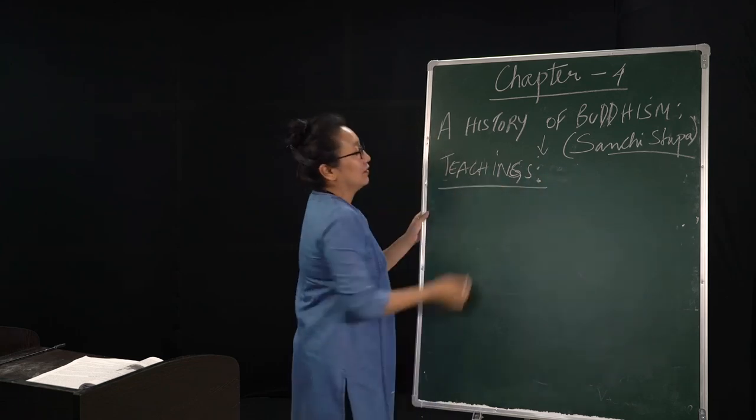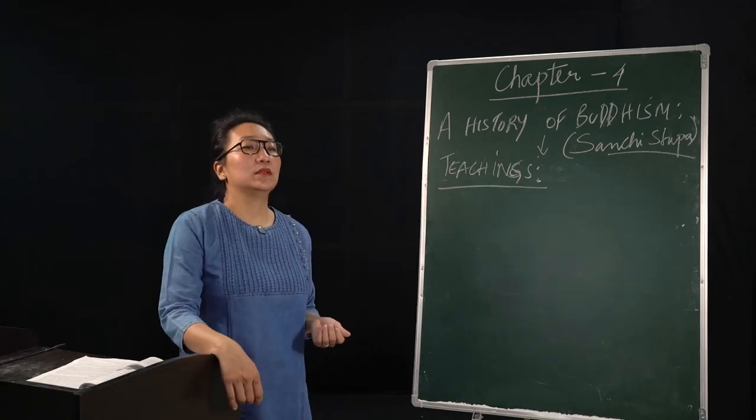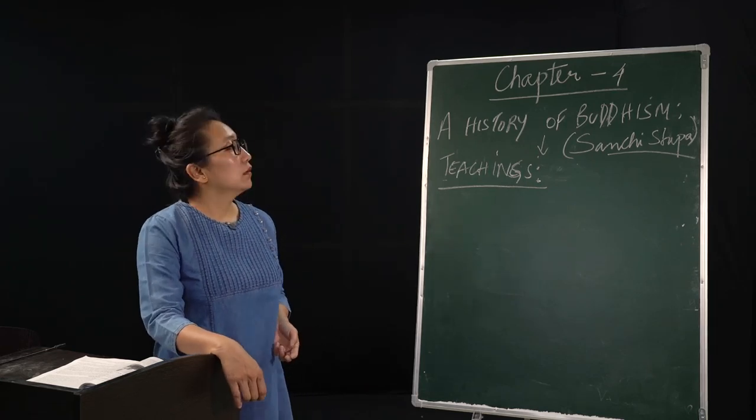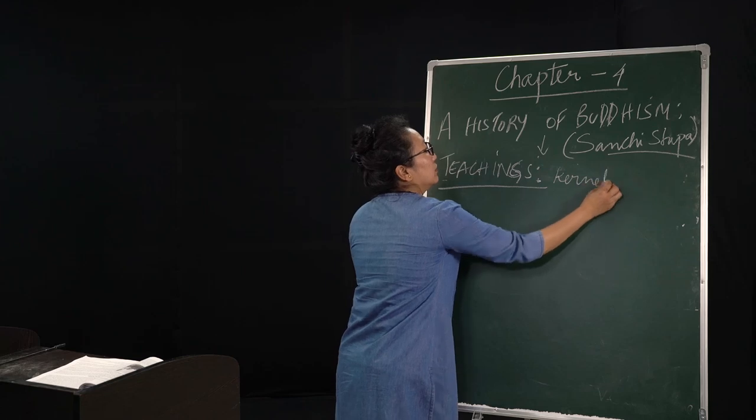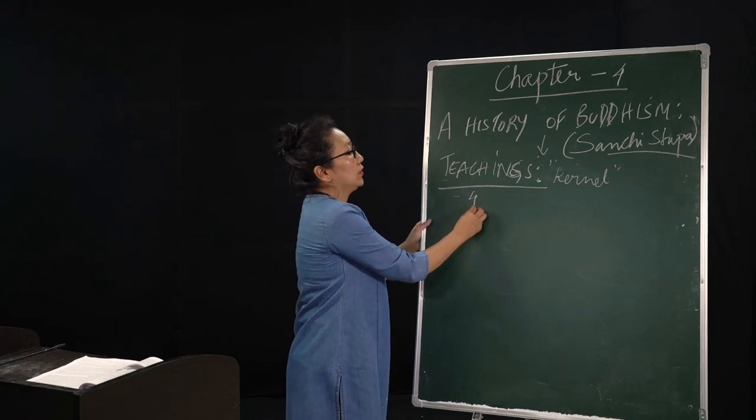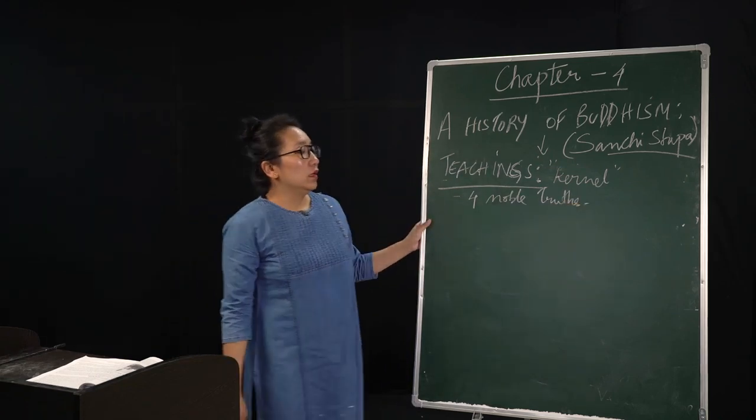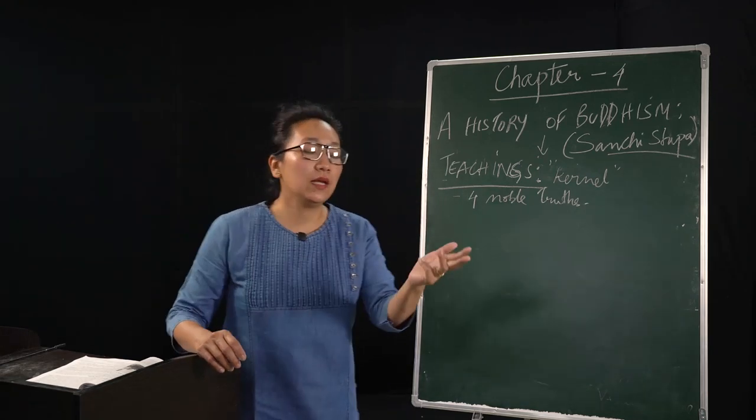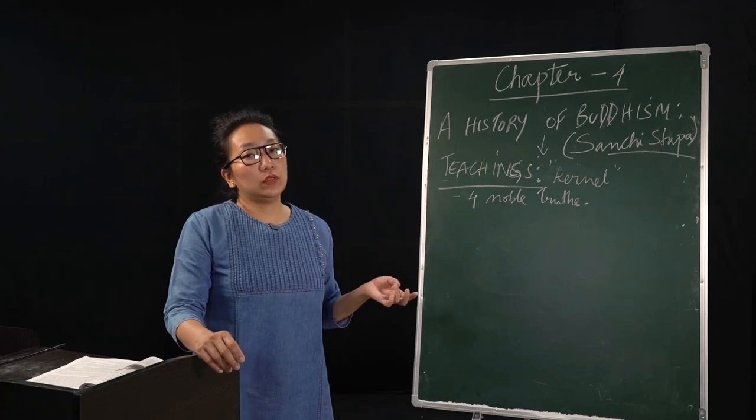He followed a number of principles that he had developed on his own by realizing the truth. The first sermon that he gave in Benares, that was his doctrine, and that is considered to be the kernel, or you can say the seed of his teaching. The first sermon was known as the Four Noble Truths. In these Four Noble Truths, he preached on four truths. The first truth was, life is painful. The second truth, he said, pain in life is caused due to desires, that is called Trishna.